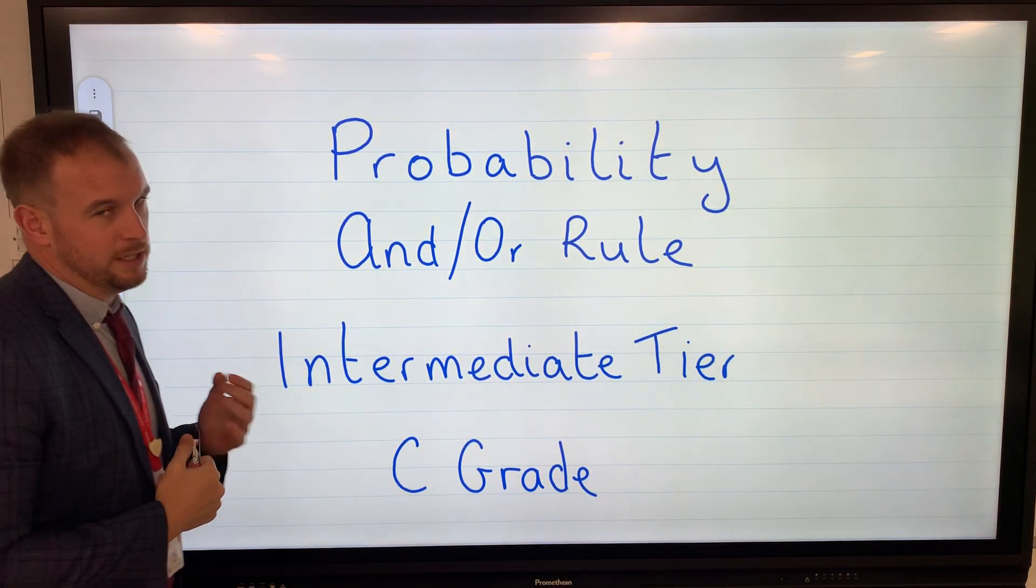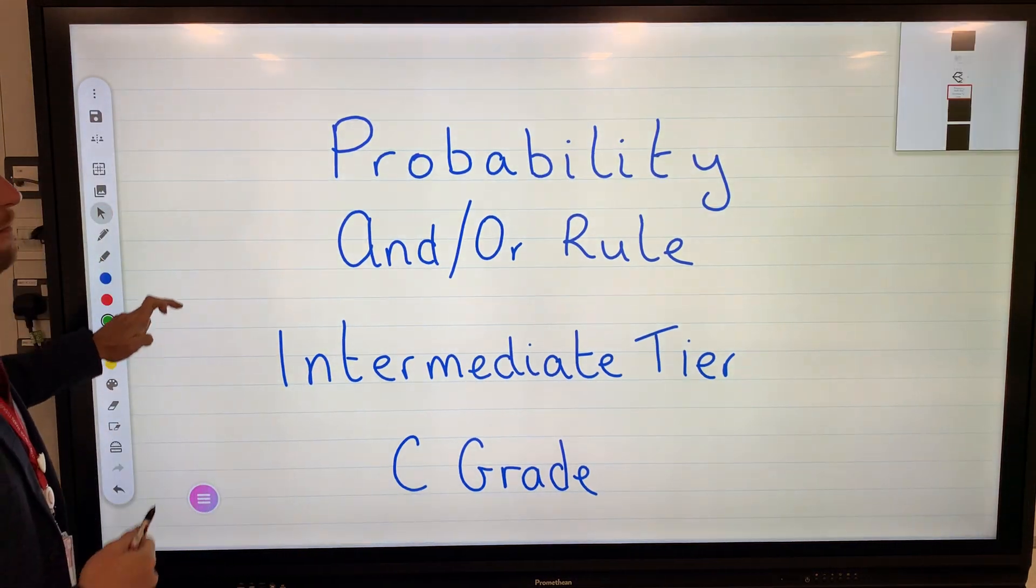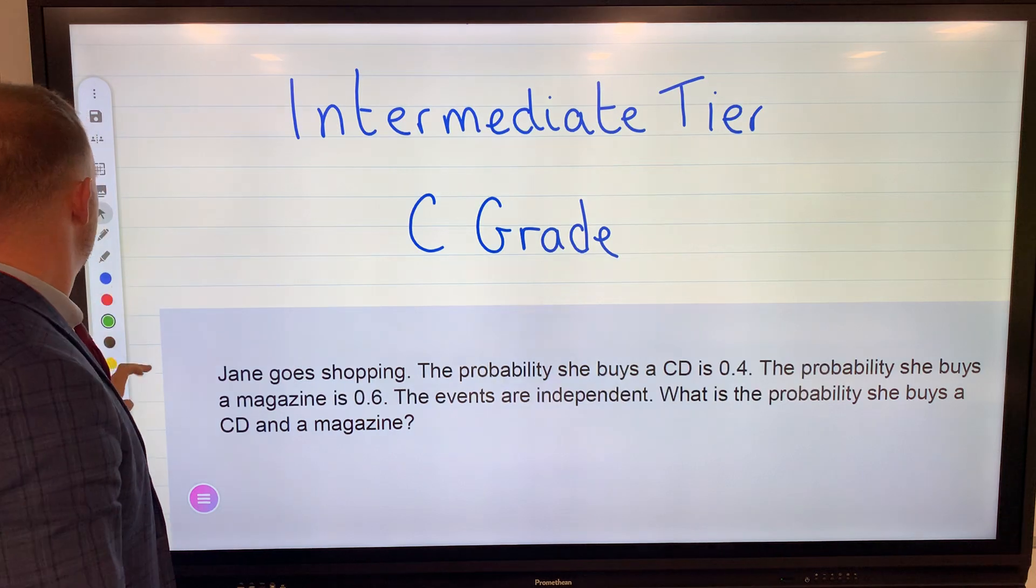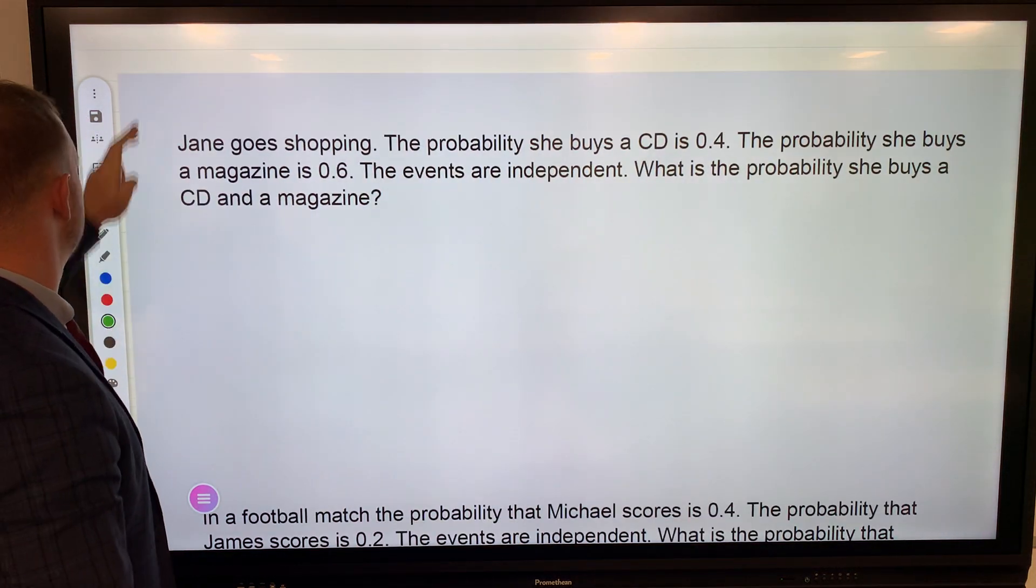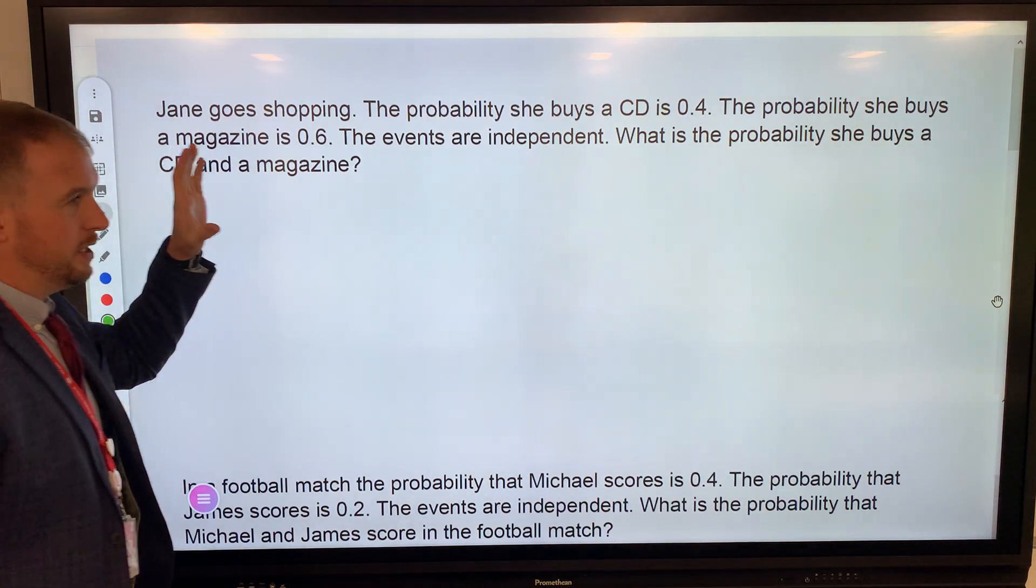Okay, so probability with the AND or OR rule, intermediate tier GCSE. I've put a couple of videos up already regarding basic probability and tree diagrams. Today we'll look at the in-between level with the AND and OR rule.